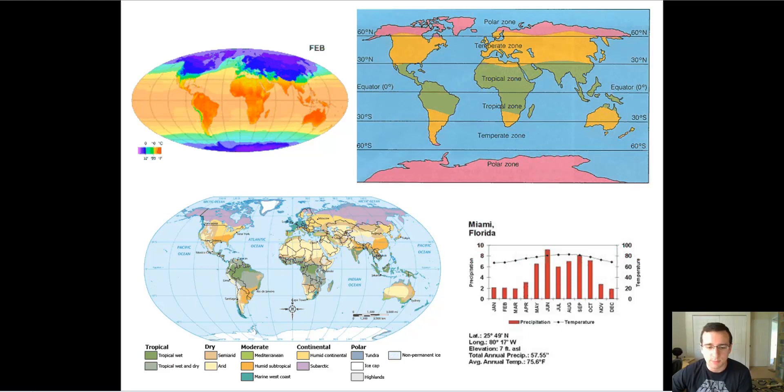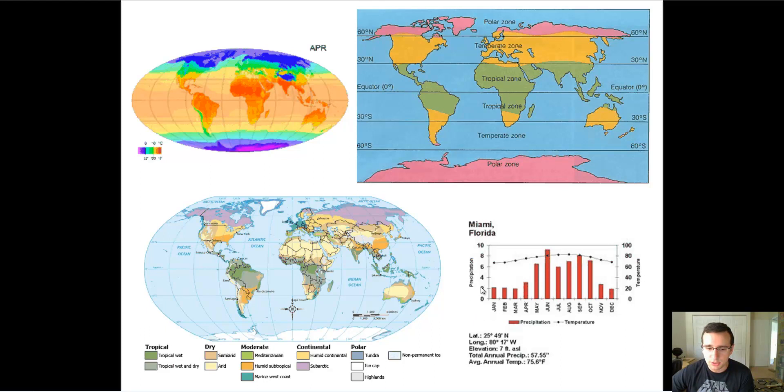A climatograph is a graph that shows your precipitation in bars and temperature with a line throughout the year in the same picture. All the bars here show how much rainfall is falling throughout the year, and then the line represents temperature fluctuations.